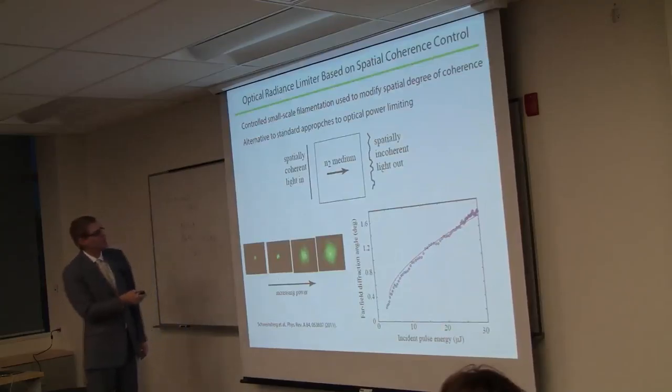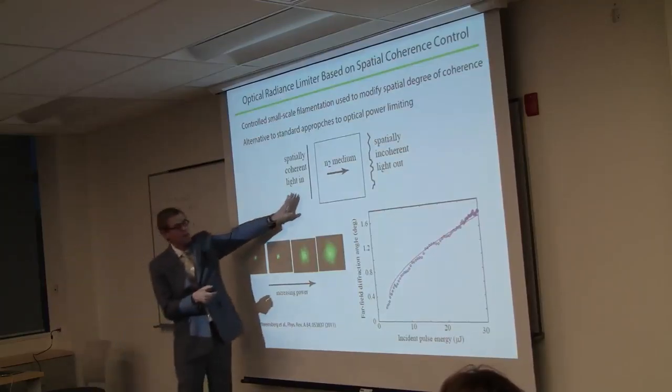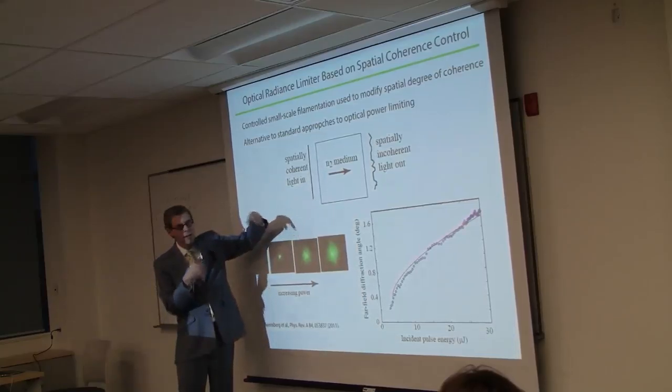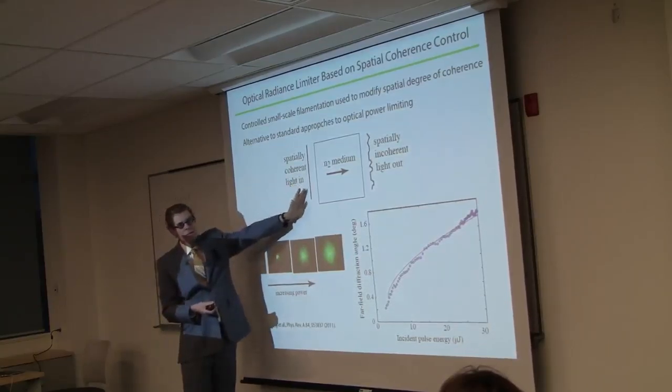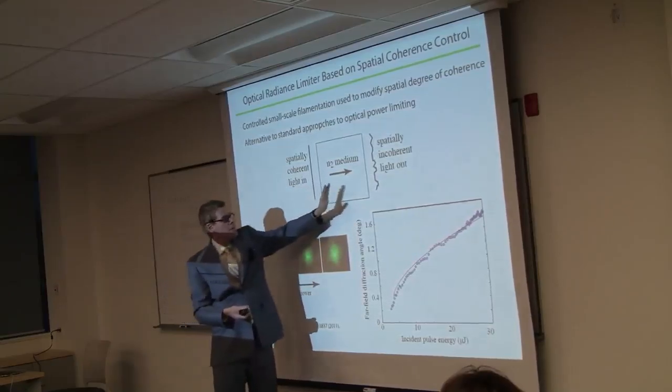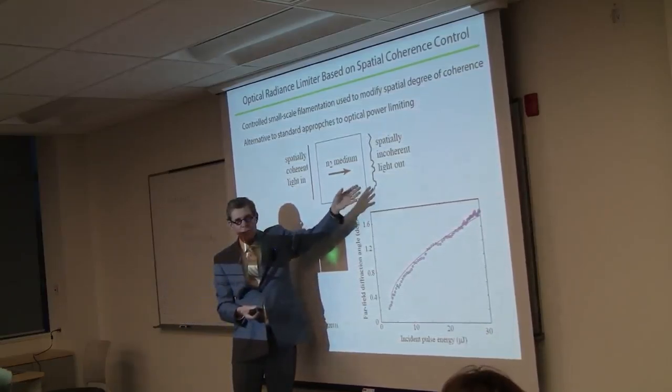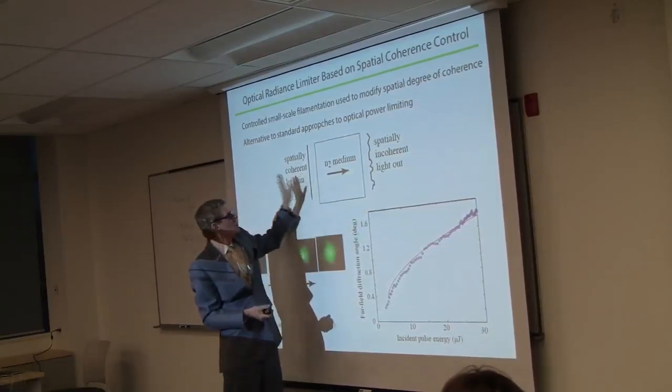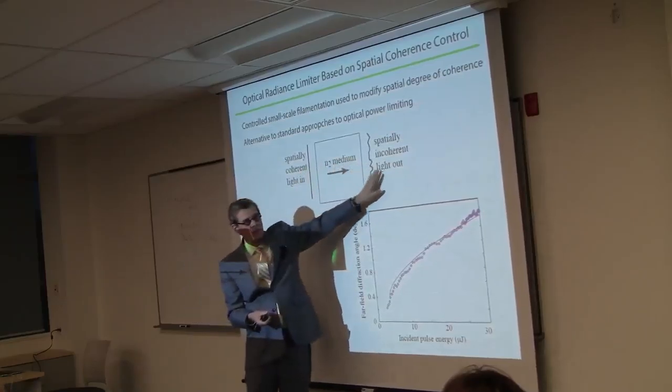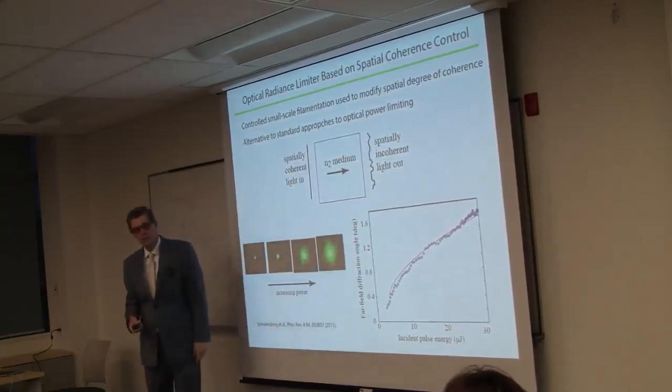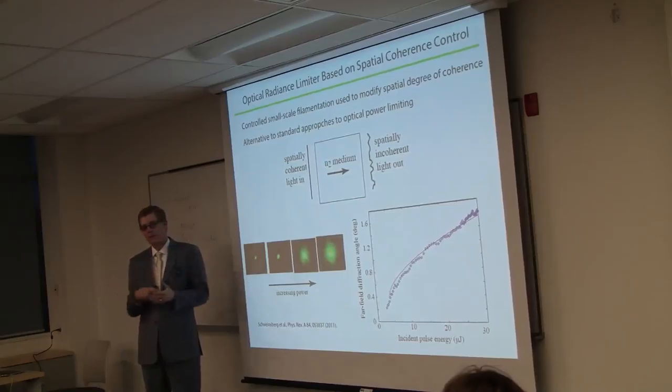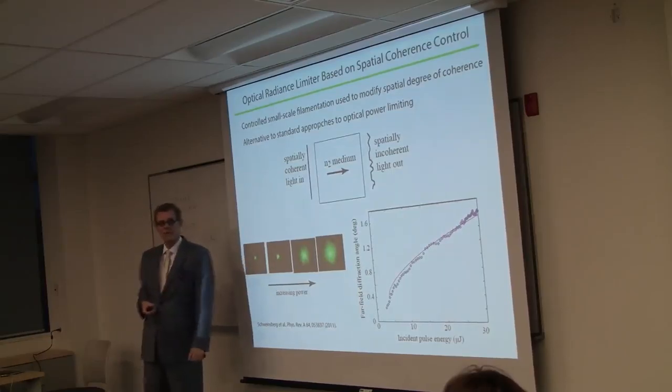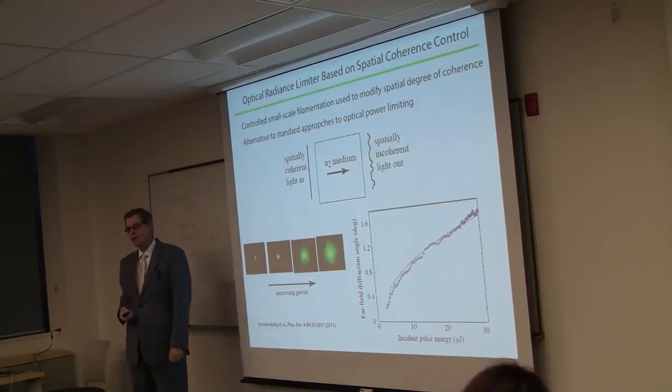This is something still more recently. We've found a way that we can degrade the spatial coherence of a laser beam. So a spatially coherent beam goes in. This is small-scale filamentation, but we arrest the process before it becomes fully developed. So coherent light in, incoherent light out. Why would you want to do this?